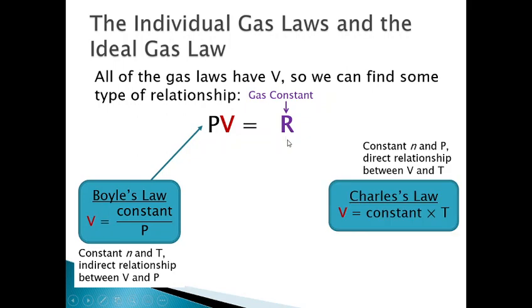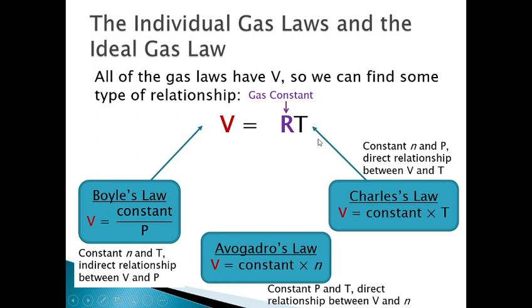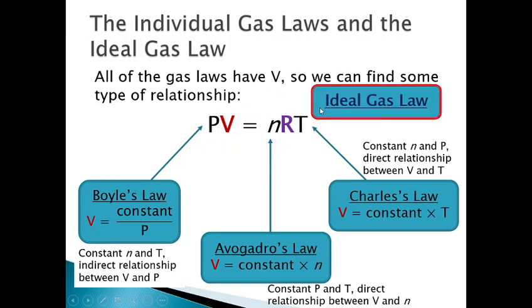Charles' Law also had to do with volume. Charles noted that volume and temperature have a direct relationship — if volume goes up, temperature goes up by a constant amount. Keeping the same constant R and rewriting the equation, we get volume equals R times temperature. Last but not least, Avogadro's Law also had to do with volume — if you have more stuff, it takes up more volume by a constant amount. Rewriting that equation with the same R: volume equals R times moles. Combining all three equations, we get what we refer to as the Ideal Gas Law.